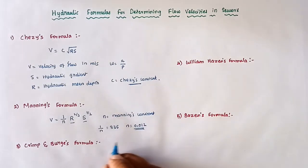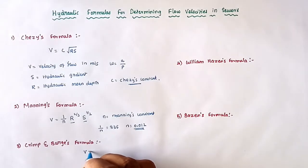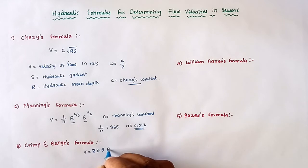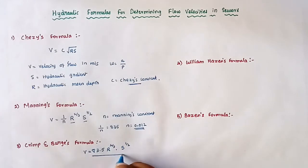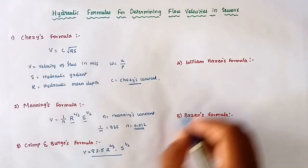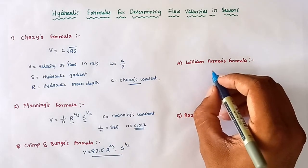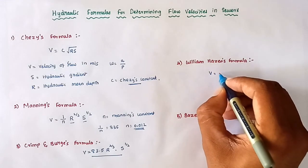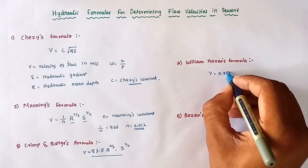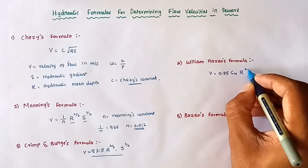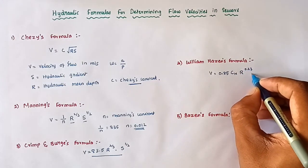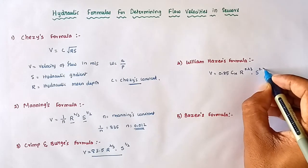Next is Crimp and Burge's formula: V = 83.5 × R^(2/3) × S^(1/2). Then the Hazen-Williams formula, which is important: V = 0.85 × C_H × R^0.63 × S^0.54.